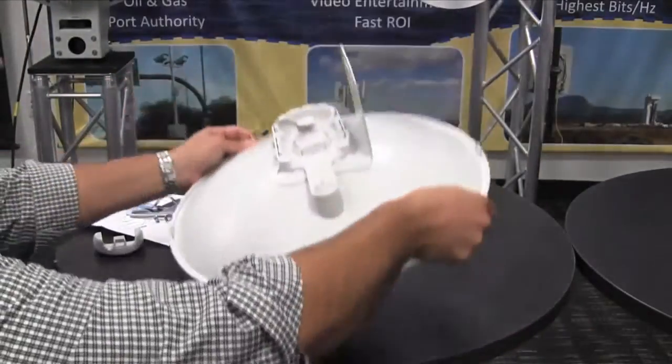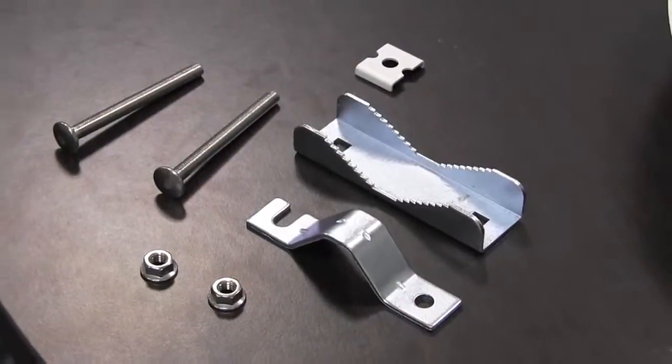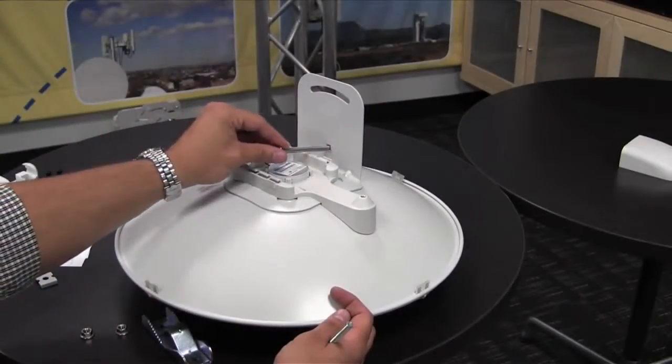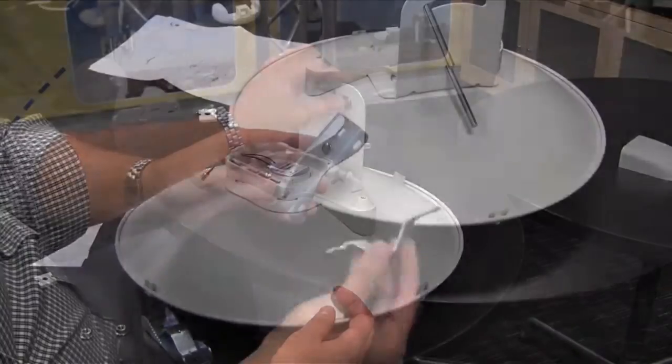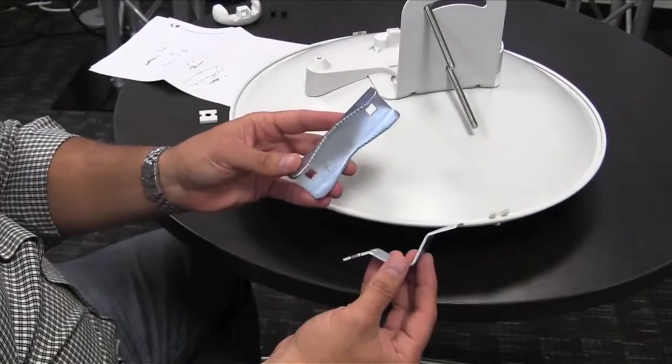Flip the dish over again to install the mounting bracket hardware. Insert one bolt into the bottom hole and one bolt into the top slot. Insert the pole bracket clamp into the pole bracket mount.